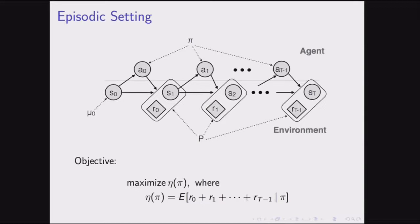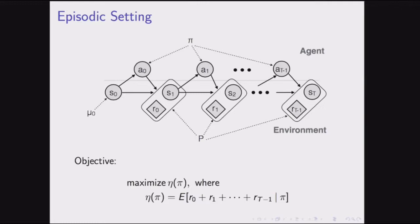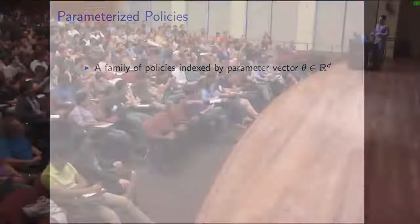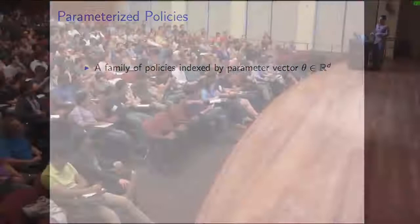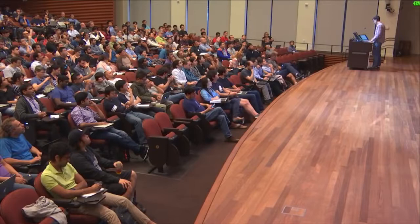Here's a graphical model illustration of the same thing. In the policy gradient section we'll be interested in parameterized policies with a parameter vector theta that specifies exactly what the policy is — for example, all the weights of a neural network architecture. We can have deterministic or stochastic parameterized policies.